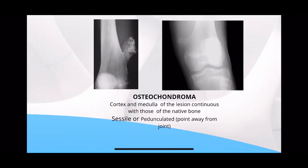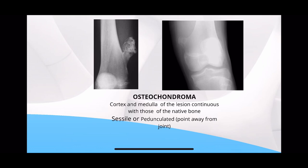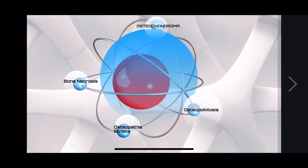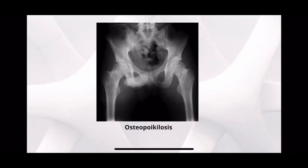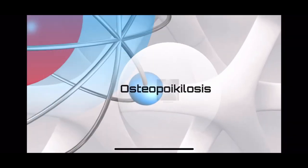Osteochondroma — again, one of the very easy bone tumors to identify on X-ray. They are generally pedunculated, or may be sessile. They point away from the joint, and the medullary cavity of this tumor is in continuation with that of the native bone. It also has a cartilaginous cap which you will not see on X-ray. This can also get converted into chondrosarcoma.